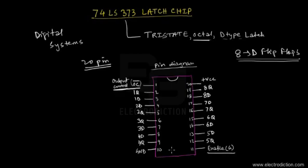This chip has a maximum supply voltage requirement of about 5.25 volts. You can give a maximum supply voltage of 5.25 volts.